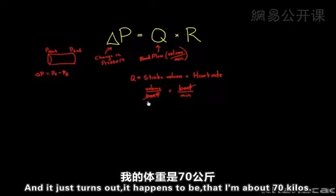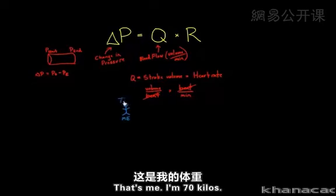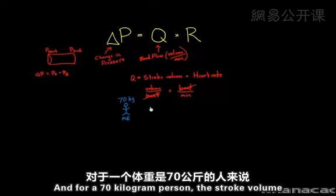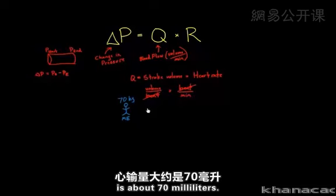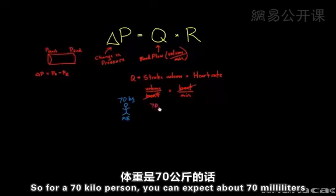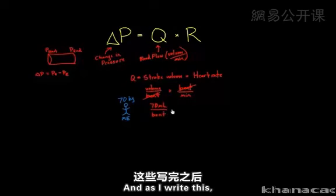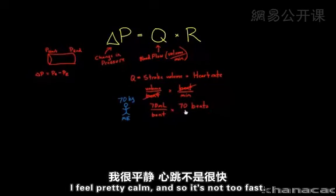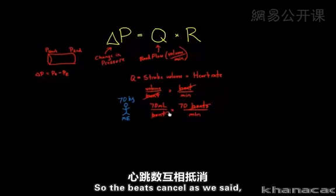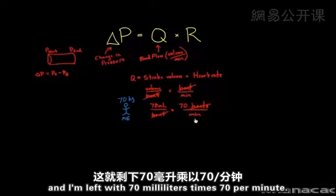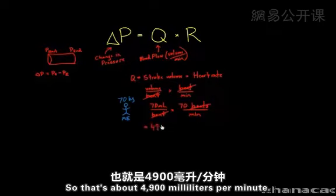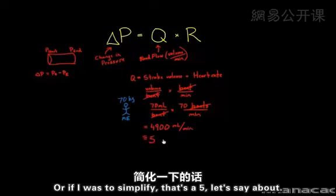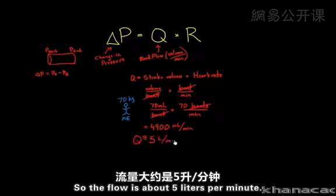For a 70-kilogram person, the stroke volume is about 70 milliliters per beat. With a heart rate of about 70 beats per minute — I feel pretty calm — the beats cancel, leaving 70 mL times 70 per minute, which is about 4,900 milliliters per minute, or roughly 5 liters per minute. So the flow Q is about 5 liters per minute.